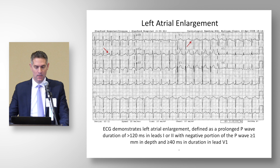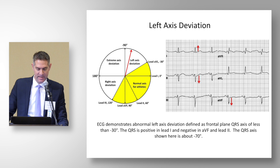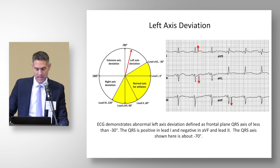An example of left axis deviation: the QRS is positive in lead one but negative in lead AVF and lead two, suggesting the axis is leftward of minus 30 degrees — qualifying for left axis deviation, in this ECG approximately minus 70 degrees.